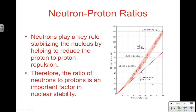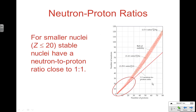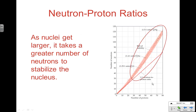For smaller nuclei with atomic number under 20, stable nuclei will have a neutron-to-proton ratio of close to 1. The red line on our graph shows the 1-to-1 line, and at the beginning most stable nuclei are right around that 1-to-1 area. As nuclei get larger and have more protons, we need a greater number of neutrons to help overcome the strong repulsions, so we see a greater neutron-to-proton ratio than 1. We need more neutrons relative to protons to stabilize the nucleus and have any hope of making a stable nuclide.